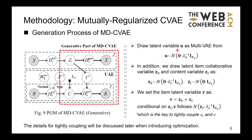For the generative process, just like the baseline UAE model Multi-VAE, we draw user latent variable u from a Gaussian distribution. In addition, we model item collaborative and content information by drawing item collaborative latent variable z_b and item content latent variable z_t from two different Gaussian distributions. We set the item latent variable v to be the sum of z_b and z_t. Note that conditional on z_t, the latent item variable v follows a conditional Gaussian distribution with z_t as its mean — a commonly used strategy to tightly couple two variables. More details on this will be provided when we introduce the MAP estimate of latent variables.